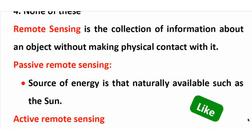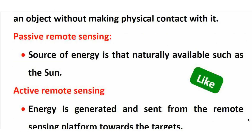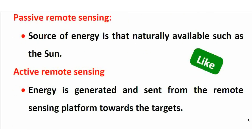Remote sensing is the collection of information about an object without making physical contact with it. There are two types: passive remote sensing and active remote sensing. Active remote sensing has its own source of energy — electromagnetic radiation (EMR) is the only source of energy used.